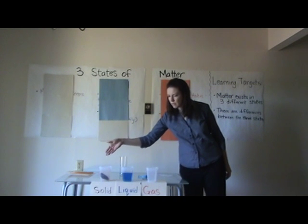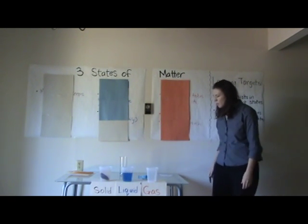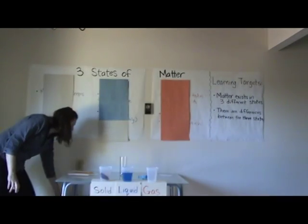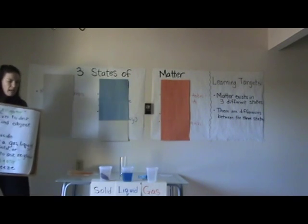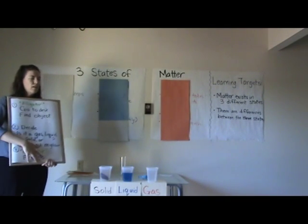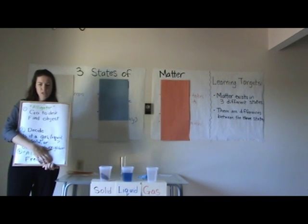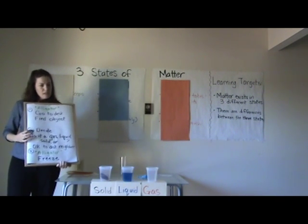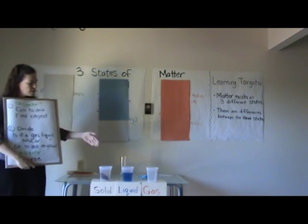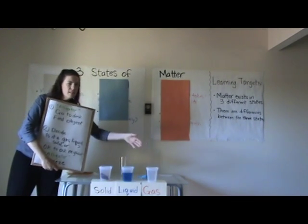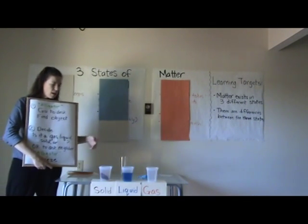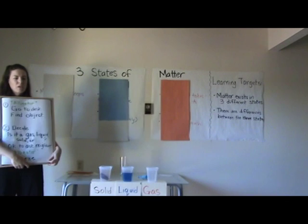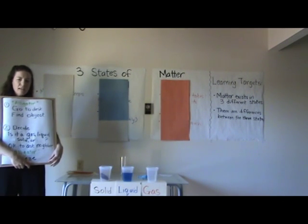We're going to play a game. Listen up as I explain the directions. First step: when I say 'alligator,' go back to your desk and find the object I put there — no trading, you keep the object I gave you. Second: decide if your object is a solid, a liquid, or a gas. It might be tricky because it could be a combination — like a solid and a liquid. I'll come around and check in, but if you're unsure, ask your neighbor in an inside voice.